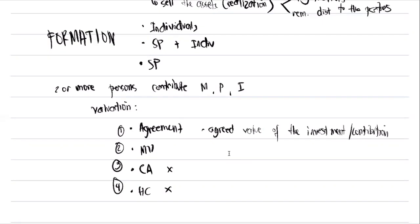Market value is the fair market value or the current value in the market — whatever is the value of the property in the market. Carrying amount is the amount of the property in the books of the partner. For a depreciable property, the purchase price less accumulated depreciation gives the carrying amount. Historical cost is the amount at which the property was purchased historically — normally the original purchase price.